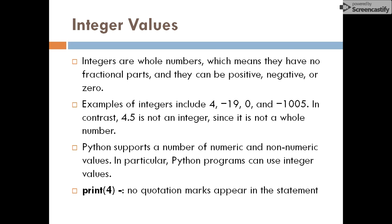Similarly, we have values in Python: integer values, floating values, string values, and so on — these are the values that we give to variables. Integer values are whole numbers, meaning they will not have a fractional part. So 5.5 is not an integer. An integer can be negative, positive, or zero, but it should not have a fractional part. Python supports a number of numeric and non-numeric values; in particular, Python programs can use integer values.